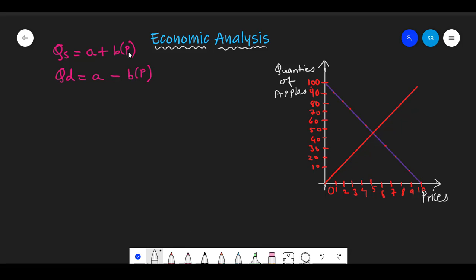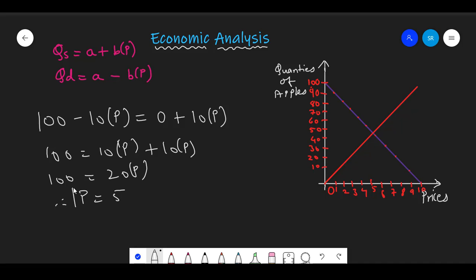Hence, if we equate the two equations and solve for them, we would end up getting our answers. Our demand equation is given as 100 minus 10 of P, and our supply equation is given as 0 plus 10 of P. Taking minus 10 of P on the other side, we have 100 equals 20 of P. Therefore, we have P is equal to 5. If we insert P in any of the equations, then we would end up getting Q is equal to 50.